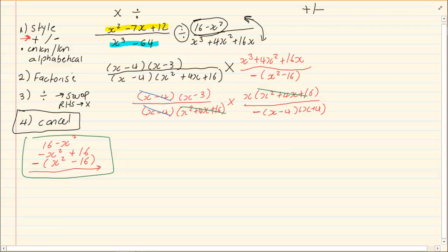Then, what are we left with now? On the top, we have x minus 3 and x. So, we are going to write it as x into x minus 3. And at the bottom, we have a minus and then we have x minus 4 x plus 4. Minus x minus 4 x plus 4.